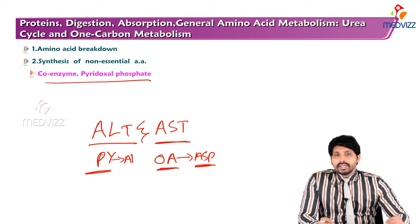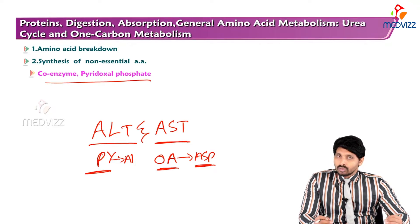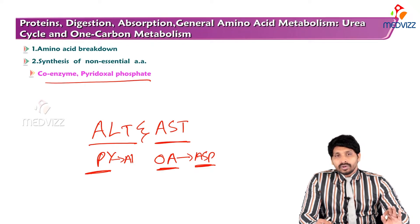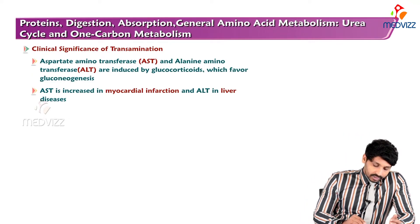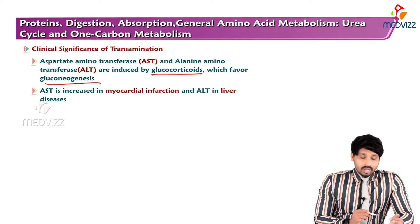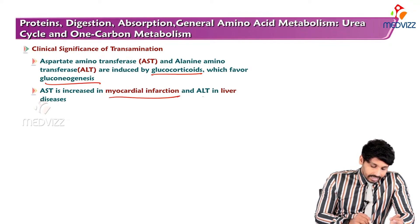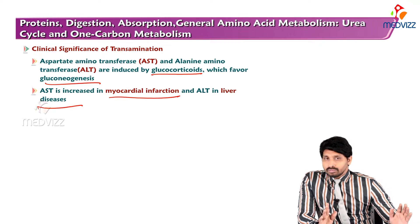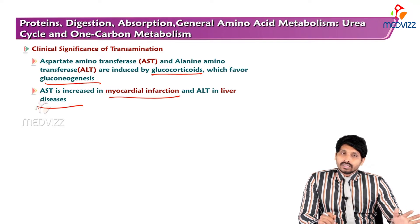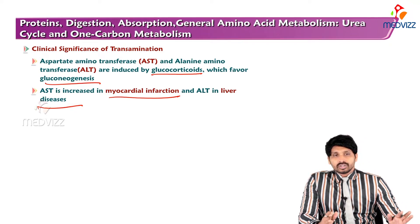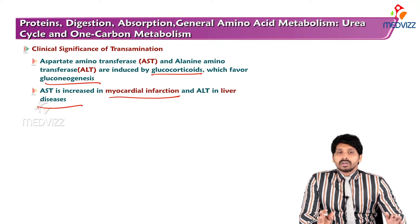ALT is one of the prominent markers for liver function. To check liver efficiency, ALT is a key parameter. Aspartate aminotransferase and alanine aminotransferase are induced by glucocorticoids, which favor gluconeogenesis. AST is increased in myocardial infarction, as it is maximally present in the heart. ALT remains a prominent marker for liver diseases.